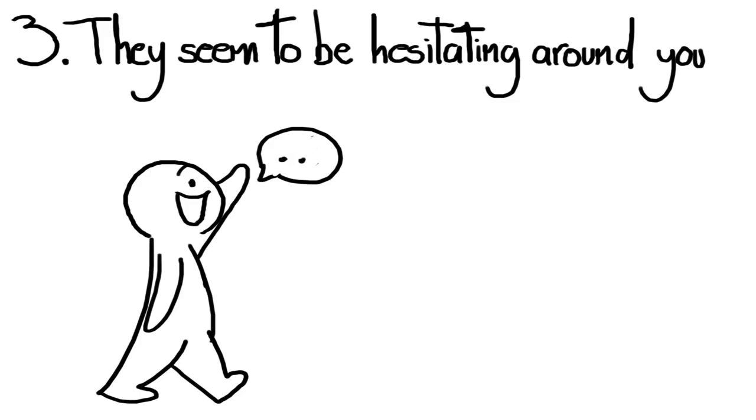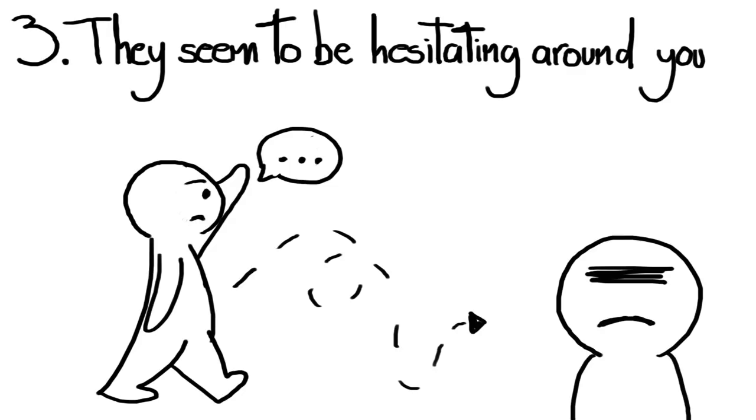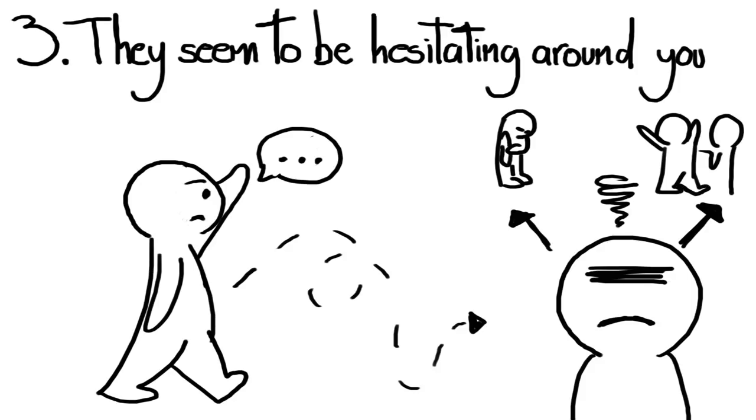Think of the introverted and extroverted sides of an ambivert arguing over what's best for their social life. While one side might shy away from the social interaction, their extroverted side really wants to stay and talk to you.